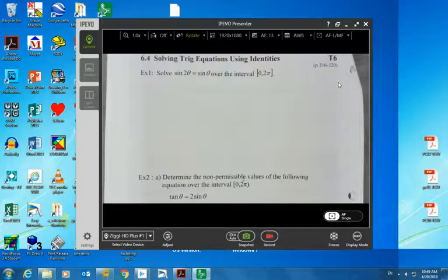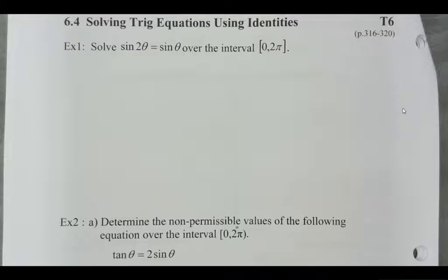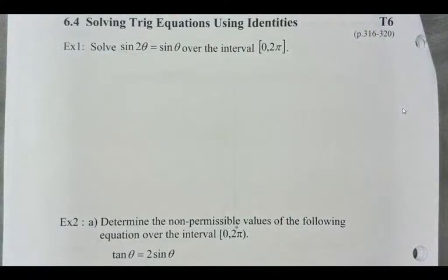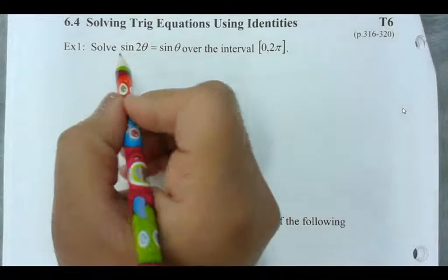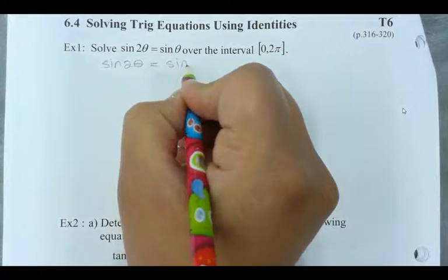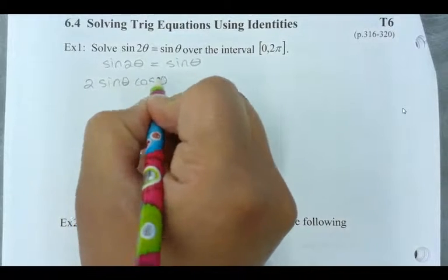Let's have a look at solving equations using trig identities. The idea here is that everything you previously know about solving trig equations applies. The only difference is that you will see something that you could replace with an identity. So what's the identity that is equal to sine 2 theta? Sine 2 theta is equal to 2 sine theta cos theta.